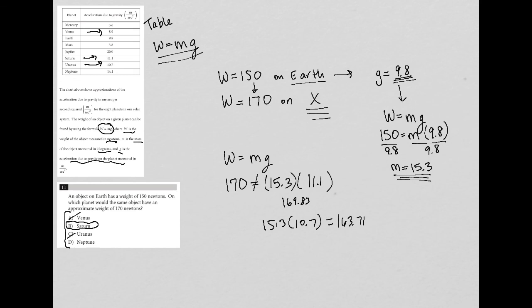And then last is Neptune, which is 14.1, which just seems like it's going to go a bit over the 170. But again, we'll try it. I won't write it down. You go to your calculator, 15.3 times 14.1. And what I get there is 215. So way, way too big. So that's gone. So we confirm that Saturn is the best answer here.